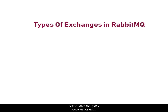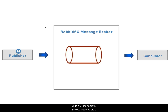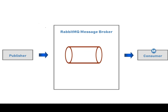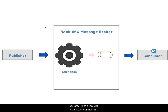Welcome to this video. Here I will explain about types of exchanges in RabbitMQ message brokers. RabbitMQ gets messages from a publisher and routes the message to appropriate queues based on the requirement. The appropriate consumer will fetch the message from the queue when required. In this flow, there is a RabbitMQ entity called exchange, which plays a vital role in receiving and routing messages from publisher to appropriate queues.